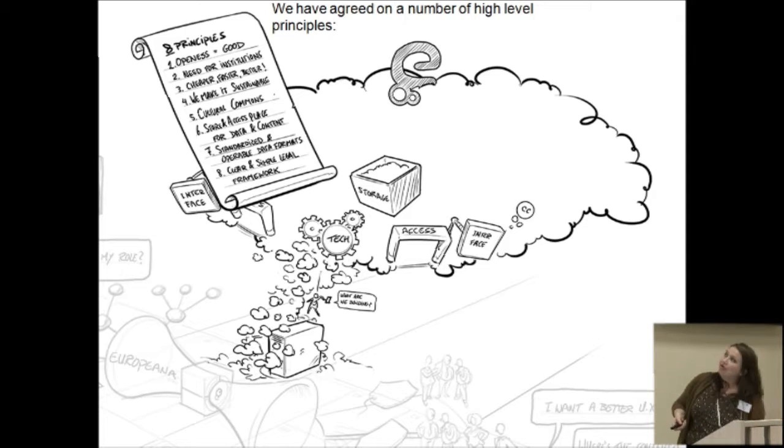We've also gotten as far as describing eight what we call high-level principles which determine the very early shape of Europeana Cloud. I'm not sure if you can read that. The first one is that Europeana Cloud will be open, and this is a good thing, that it's really there to serve the needs of cultural heritage institutions, to publish their metadata, to make their digital objects more findable, more searchable, more usable. We want the service to be cheaper, we want it to be better than existing services, and we want it to be faster. Sometimes Europeana portal is quite slow.